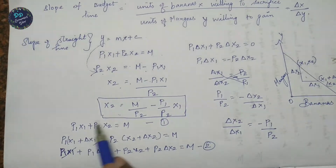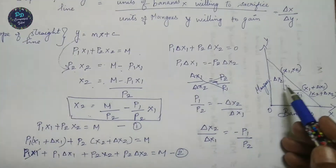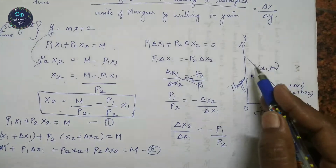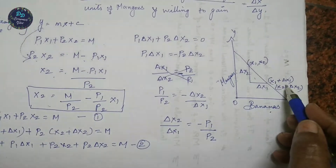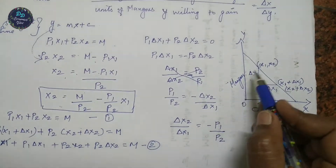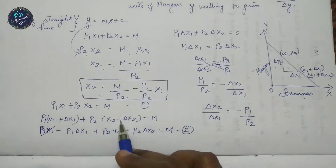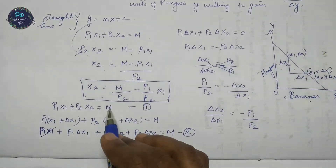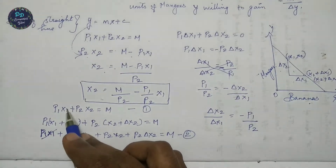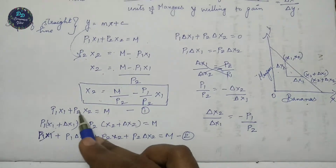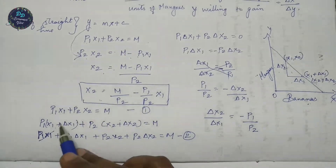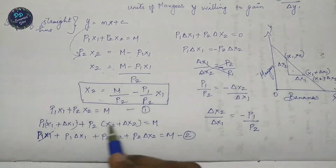Since x1 and x2 are good one and good two, if changes happen in these two goods, we substitute (x1 + Δx1) in place of x1 and (x2 + Δx2) in place of x2 into the budget equation. After expanding the multiplication: p1·x1 + p1·Δx1 + p2·x2 + p2·Δx2 = M.